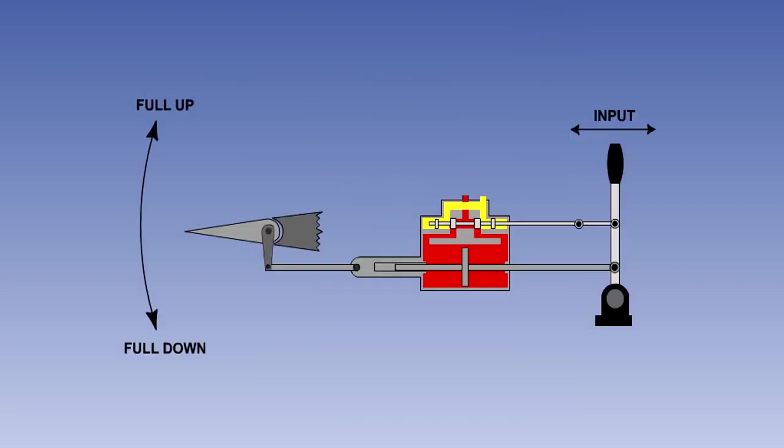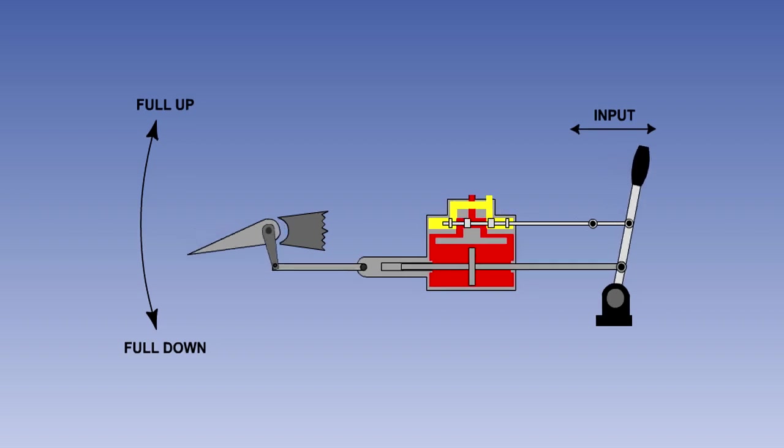We will first look at how the system will operate without hydraulic power. When the pilot makes a control input, he will be attempting to move the hydraulic jack ram. Because of the hydraulic lock, the entire actuator will move, and with it, the flying control.